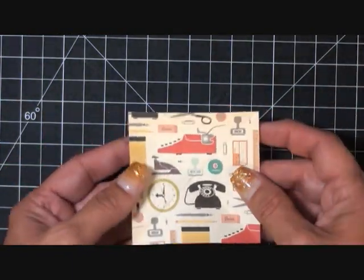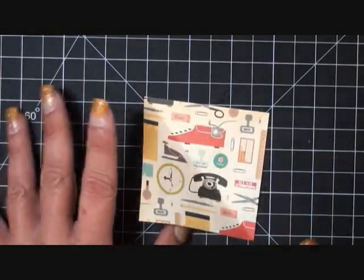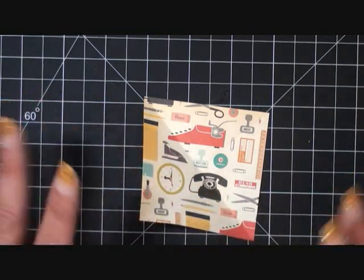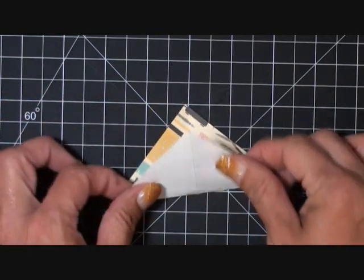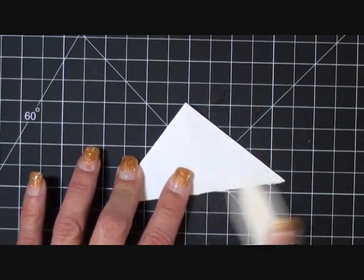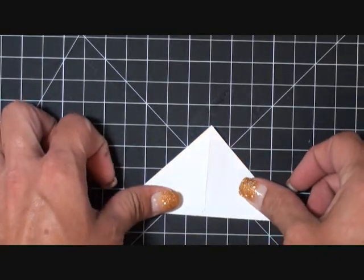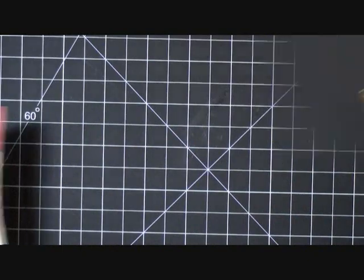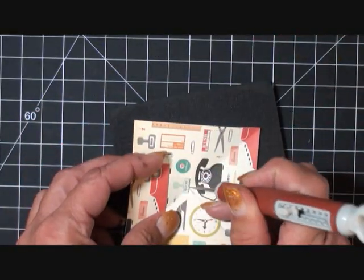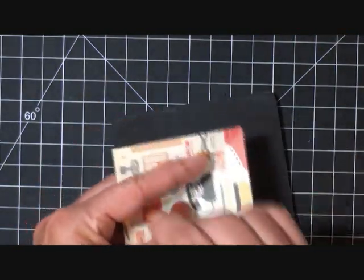Our largest one, and I saved this for us to do our project with, is going to be three by three. Love this paper. What you want to do, you can use the scoreboard for this, fold it in half this way, then use your bone folder and fold it in half that way. After that, stick a big hole in the middle.